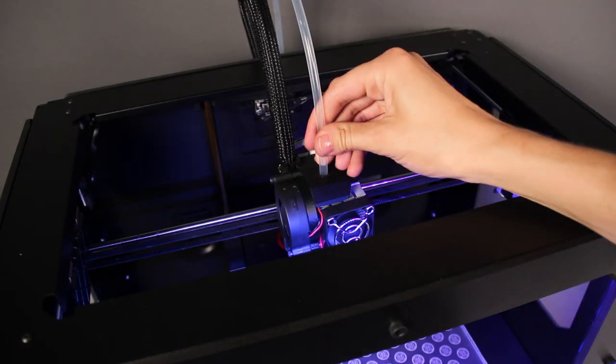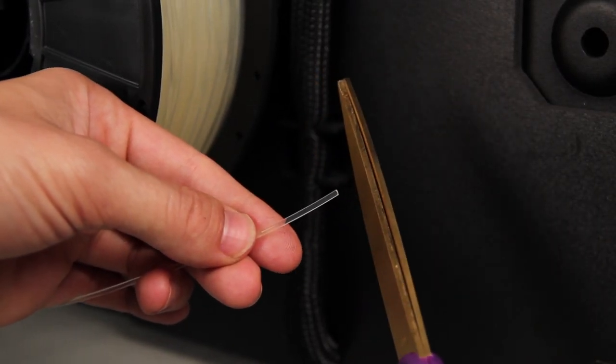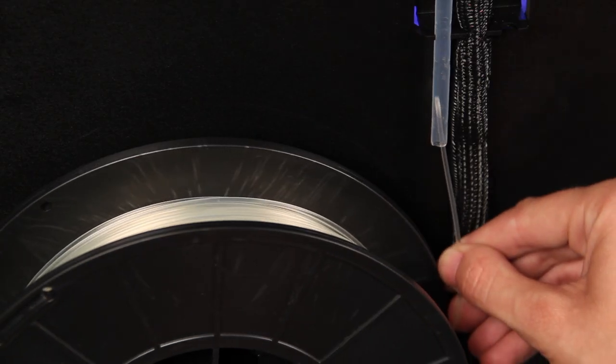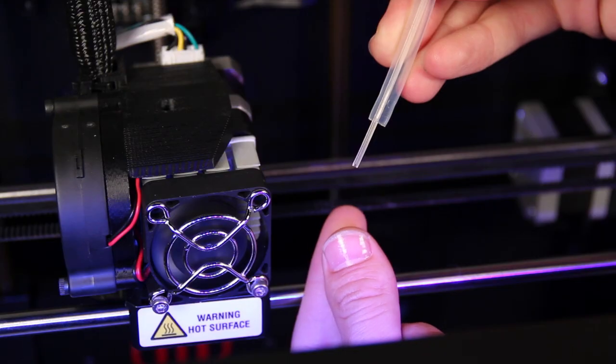The first step in filament loading is to pull the filament guide tube out of the top of the extruder. Now trim off the end of your MakerBot PLA filament and feed it through the other end of the guide tube until you see the end of the filament come out of the tube.